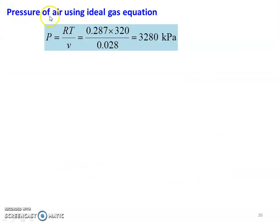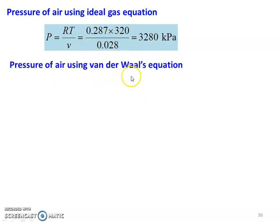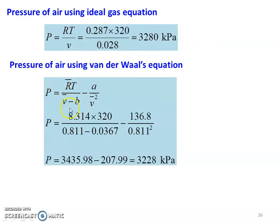Pressure of air using the ideal gas equation: P equals RT divided by V = 0.287 into 320 divided by 0.028 = 3,280 kilopascal. Pressure of air using the Van der Waals equation: P equals R-bar T divided by (V-bar minus B) minus A divided by V-bar squared. Substituting: 8.314 into 320 divided by (0.811 minus 0.0367) minus 136.8 divided by 0.811 squared. First term gives 3,435.98, second term gives 207.99, so pressure = 3,228 kilopascal.